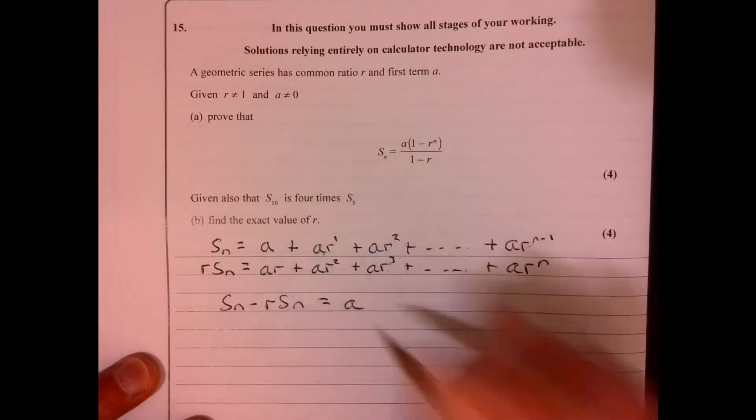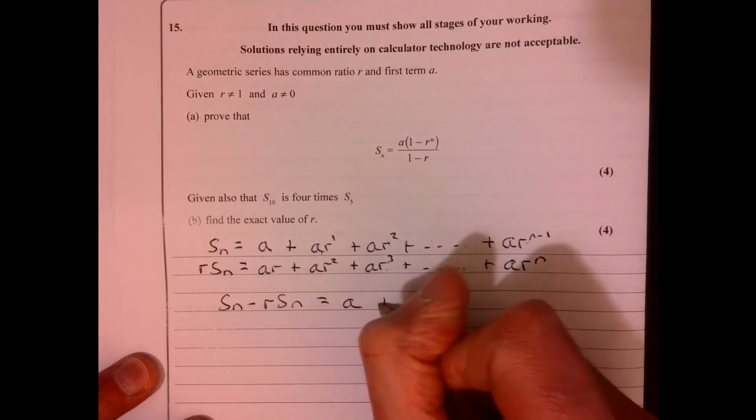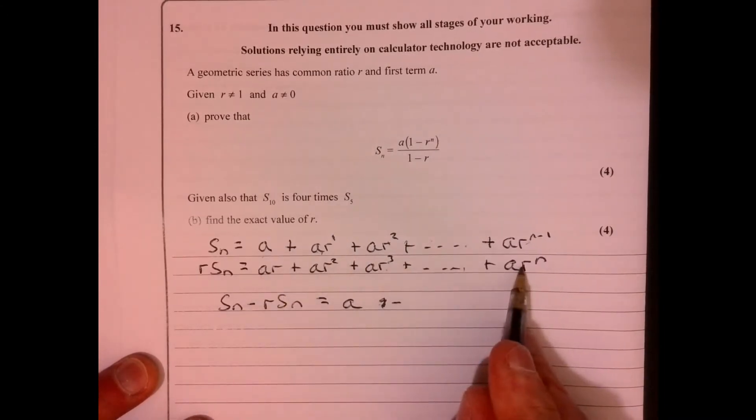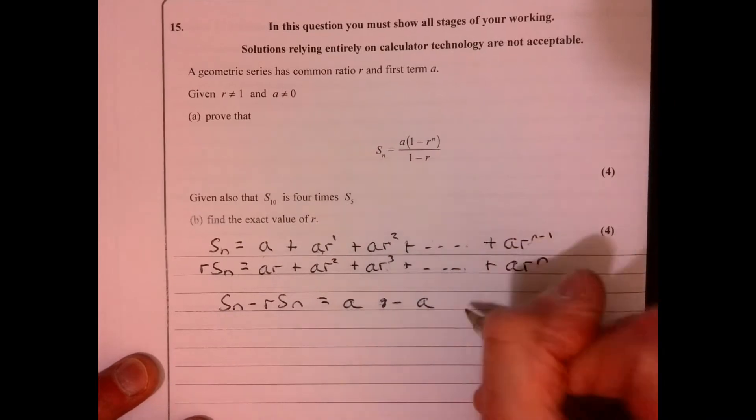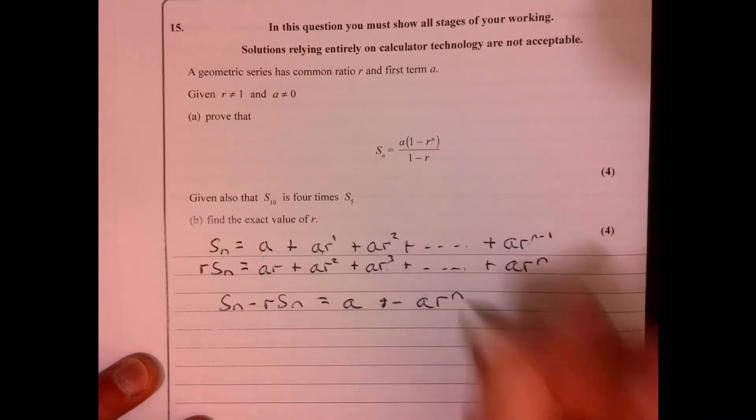So what would you be left with? You'd be left with a, let's go back, plus then minus, because it's minus, isn't it? Because it's this lot, take away this lot, and then that will give you that one.